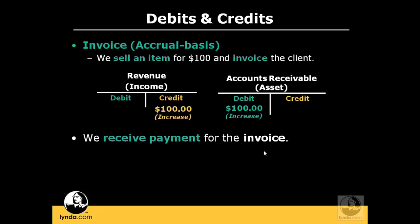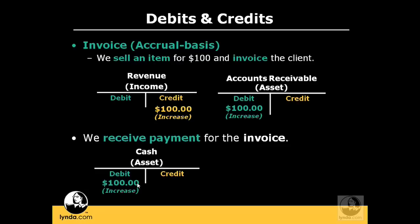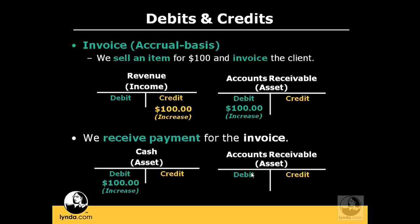The client has now paid us and we've received the payment, and we have to record that money in QuickBooks. The first account we have to affect is our cash account — we want to record the money. Cash is an asset, and we want to increase cash by $100. How do we increase an asset account? We debit it. So we're going to debit cash $100. Now, accounts receivable is used for money people owe you. These people have now paid us, so we have to reduce accounts receivable by $100 — we have to lower the amount owed because it's no longer due. If we debit to increase it, the opposite holds true to decrease it: we're going to credit it.